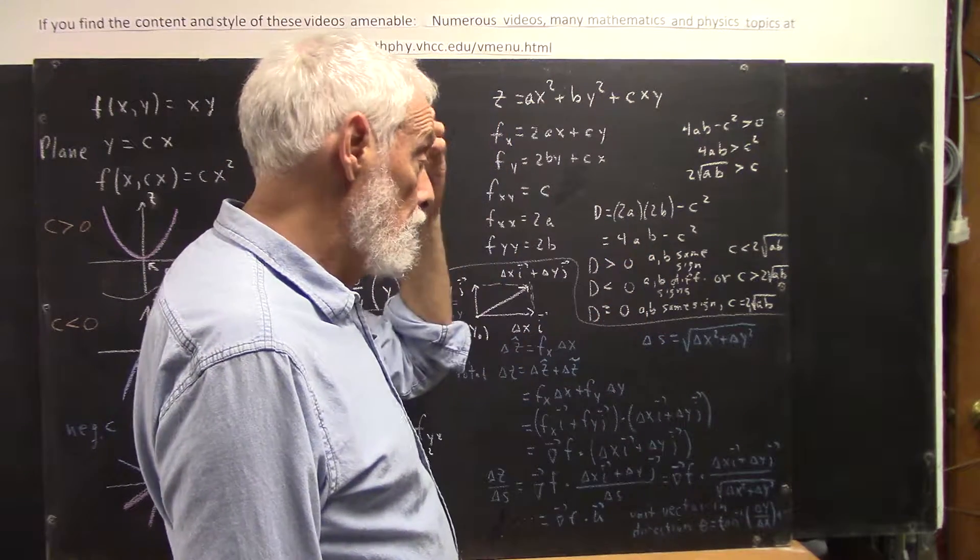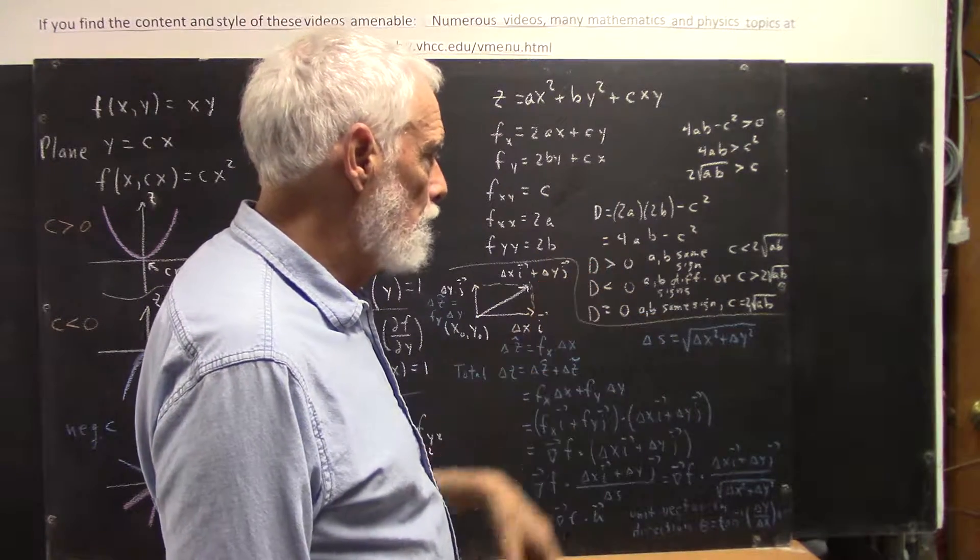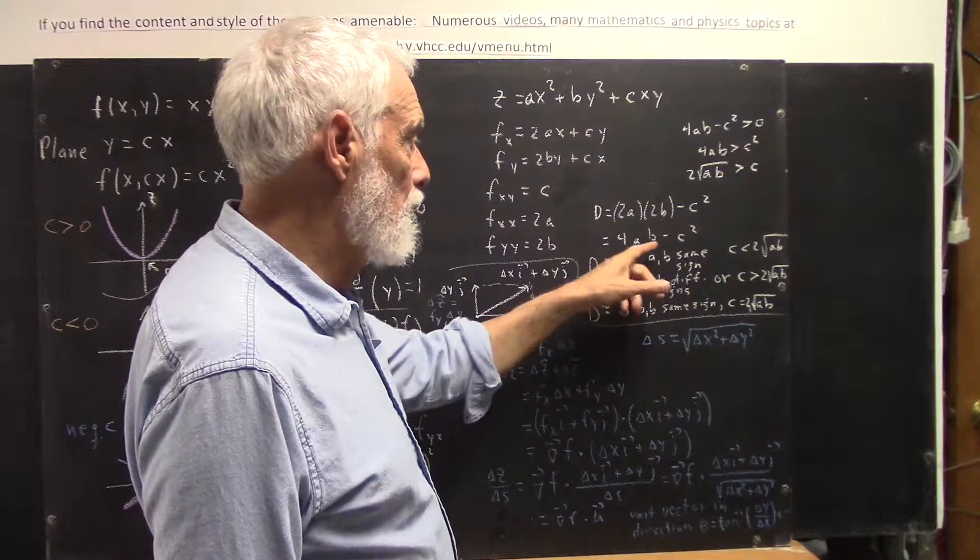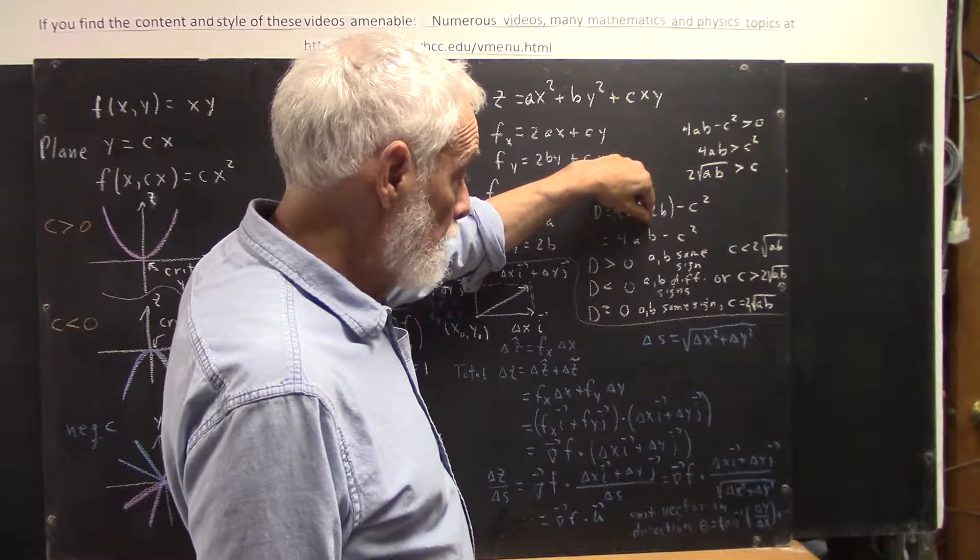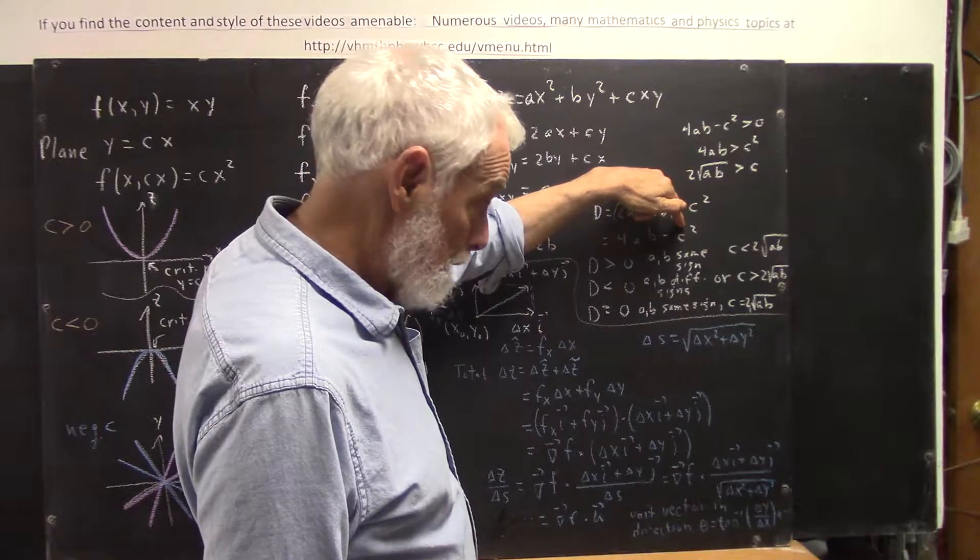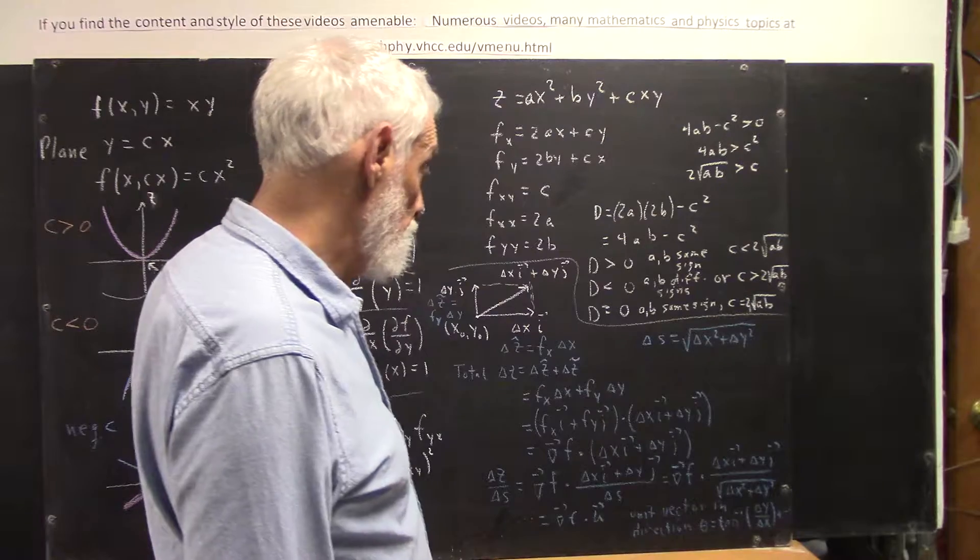d equals 0 occurs. Well, a and b would have to have the same sign, because obviously if they have different signs, you're going to get a negative. And also, c squared has to equal 4ab, so c has to equal 2 times the square root of ab.